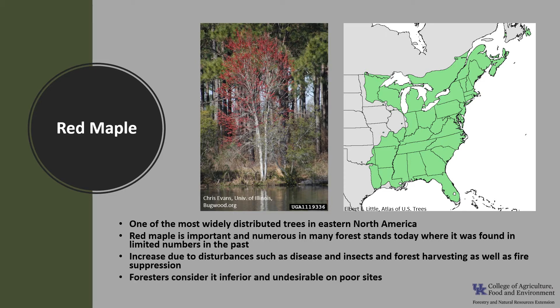Many foresters consider the tree inferior and undesirable because it is often poorly formed and defective, especially on poor sites. On good sites, however, it may grow fast with good form and quality for saw logs.